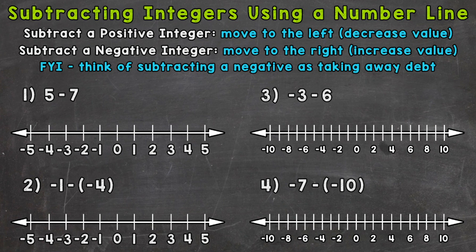A couple of very important points at the top of the screen. When we subtract a positive integer, we move to the left on the number line because we are decreasing in value. When we subtract a negative integer, we move to the right on the number line because we are increasing in value.